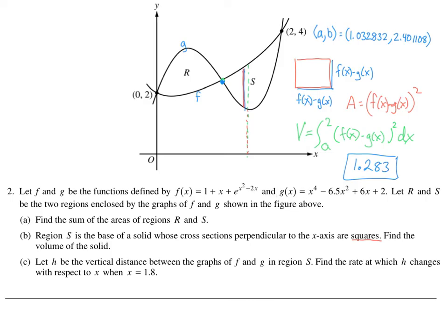Remember: perpendicular to the x-axis means cross sections are oriented this way. If it were perpendicular to the y-axis, it would be that way. For squares, the base and height come from the function difference, and the area of a square is base times height. The area function always goes inside the integral, and the interval goes perpendicular to it.